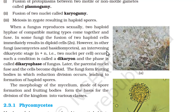When a fungus reproduces sexually, two haploid hyphae of compatible mating types come together and fuse. In some fungi, the fusion of two haploid cells immediately results in a diploid cell (2N). However, in other fungi — ascomycetes and basidiomycetes — an intervening dikaryotic stage (two nuclei per cell) occurs. Such a condition is called the dikaryon and this phase is the dikaryophase of the fungus. Later, the parental nuclei fuse and the cells become diploid. The fungi then form fruiting bodies in which reduction division occurs, leading to formation of haploid spores.